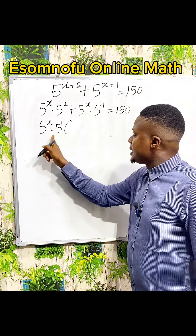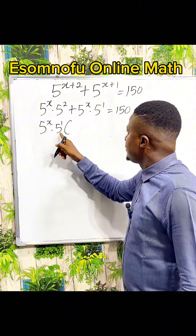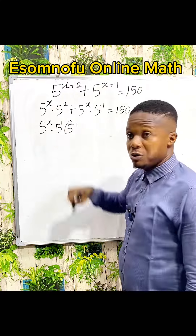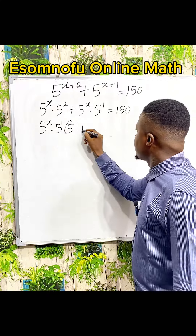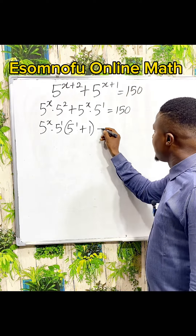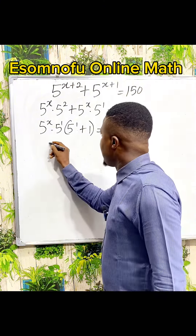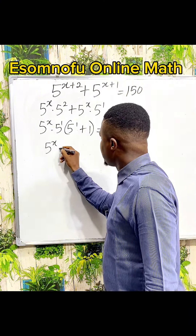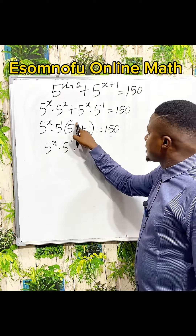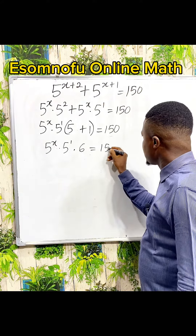Now, dividing by 5 to the power of x, we cancel 5 to the power of x. Then 5 to the power of 2 divided by 5 to the power of 1 is 5 to the power of 1, such that 1 plus 1 gives you back your 2. When you divide the second term by itself exactly, it gives us 1. So we have 5 to the power of x multiplied by 5 to the power of 1, multiplied by 5 to the power of 1, which is simply 5. And 5 plus 1 is 6. Everything is equal to 150.